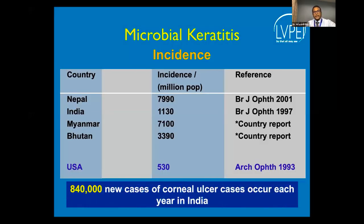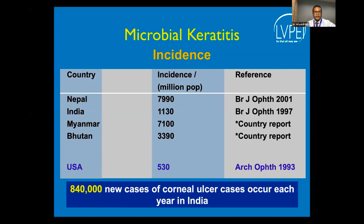Infectious keratitis is very relevant in the developing world, especially in Southeast Asia as well as in all the hot, humid, tropical, subtropical climes. The reported incidence ranges from 11,030 to 7,990, which actually translates to 840,000 new cases of corneal ulcers every year in India alone.